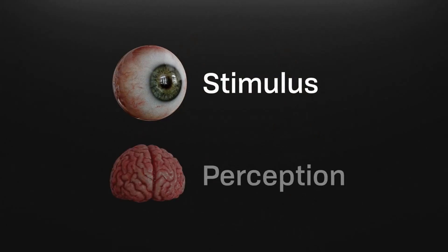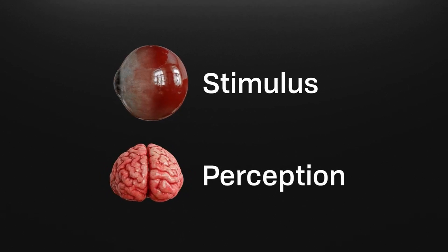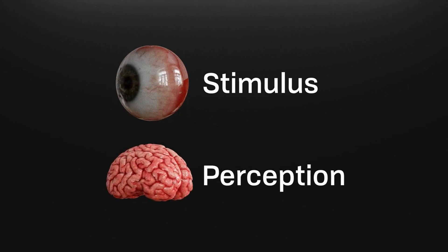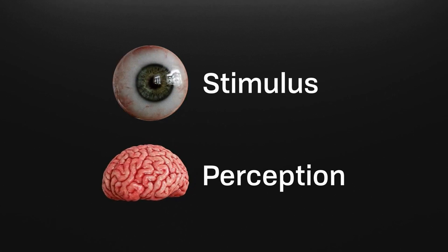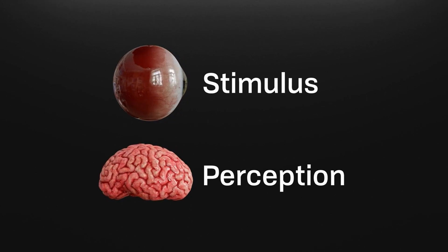When we talk about color, consider two things: there's stimulus and there's perception. These are totally different things. So when I say color's not absolute, what I'm talking about is how the perception of color is not absolute. As an artist, my job isn't about asking what's accurate as much as it is to ask: how will people perceive this?